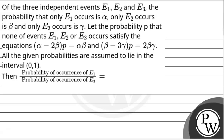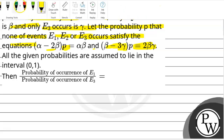Let's start the question. The question involves three independent events E1, E2, and E3. The probability that only E1 occurs is alpha, only E2 occurs is beta, and only E3 occurs is gamma. Let P be the probability that none of the events E1, E2, E3 occurs, satisfying the equations: alpha minus 2*beta equals P, and beta minus 3*gamma times P equals 2*beta*gamma.